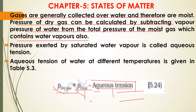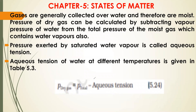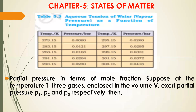The pressure exerted by saturated water vapor is called aqueous tension. Aqueous tension of water at different temperatures is given in Table 5.3, where pressure values correspond to temperature. It is not necessary to remember these moisture pressure values — just for information.